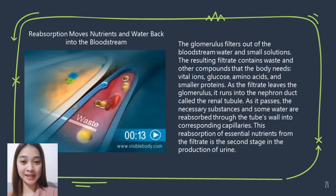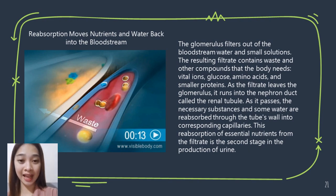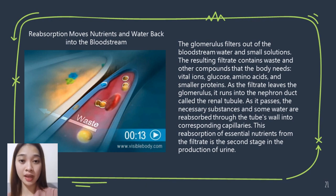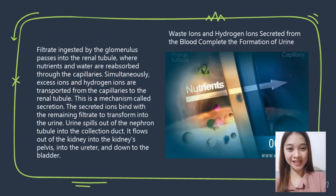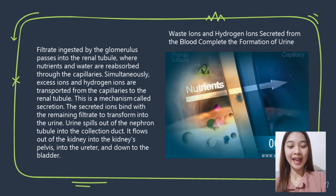Reabsorption moves nutrients and water back into the bloodstream. This is the second stage in the production of urine — the movement of essential substances out of the renal tubules back into the blood capillaries located around the tubules. Waste ions and hydrogen ions are then secreted from the blood to complete urine formation, in a mechanism called secretion.